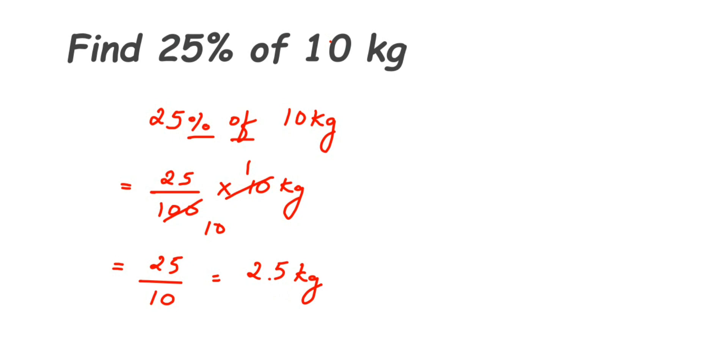If we have a hundred in the denominator, after two digits you'll get decimal from the right side. This you have learnt in lower classes, I'm not explaining much. You can divide it or you can just directly convert it. It's very easy instead of cancelling it and again dividing it, this is an easy way of doing it. So 2.5 kg is the answer. 25% of 10 kg is 2.5 kg.